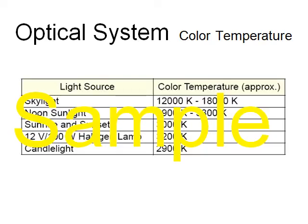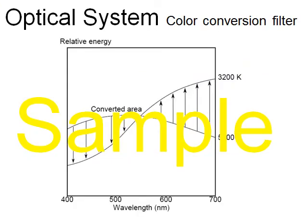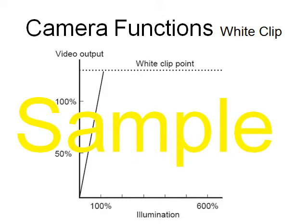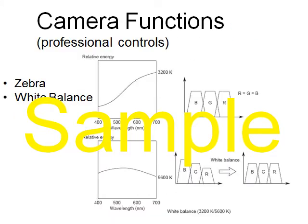Understand the relationship between different light sources and color conversion filters. How can you influence an overexposed picture? What is zebra? And how does white balance work?